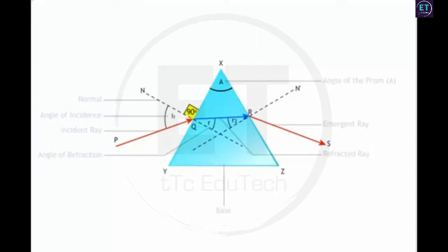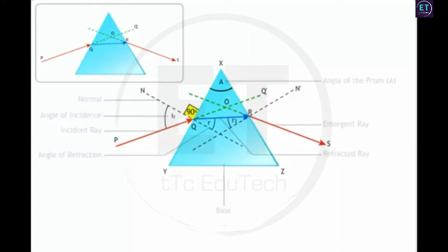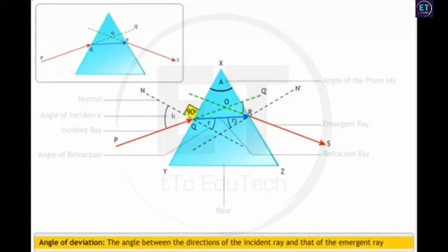In the absence of the glass prism, the incident light ray would follow the path PQOQ'. Due to the prism, the light ray emerges along the path ORS. Thus, the light ray deviates from its initial path. The angle between the direction of the incident ray and that of the emergent ray is called the angle of deviation and is represented by Greek letter delta, theta D, or the English letter D. Here, angle Q-OR is the angle of deviation.